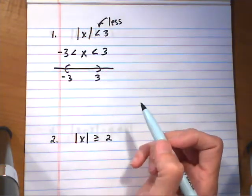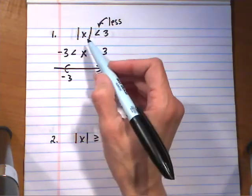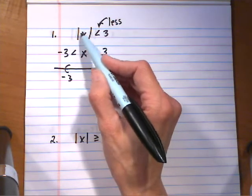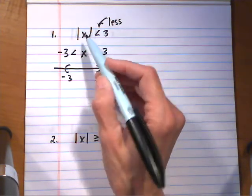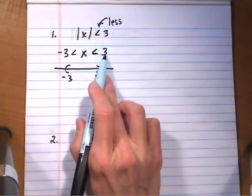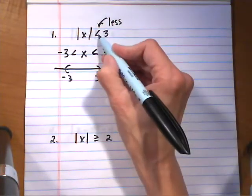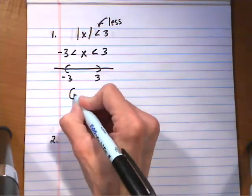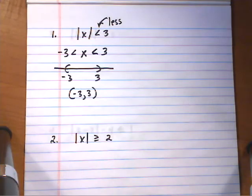That graphs out as negative 3 to 3. It doesn't matter what's inside the absolute value — it can be an entire expression. You're still going to put it in between the two endpoints, negative and positive of what's on the right, when you have a less than. Interval notation: negative 3, 3 with parentheses.